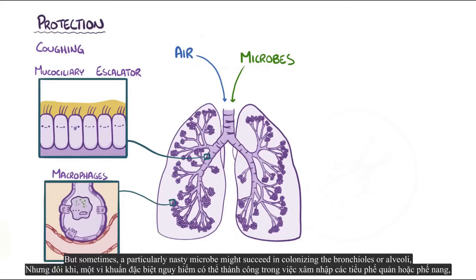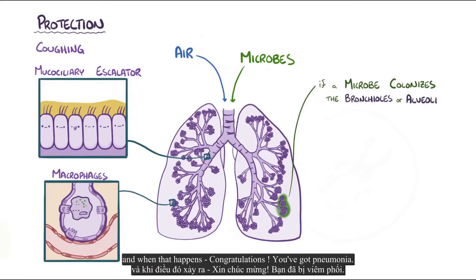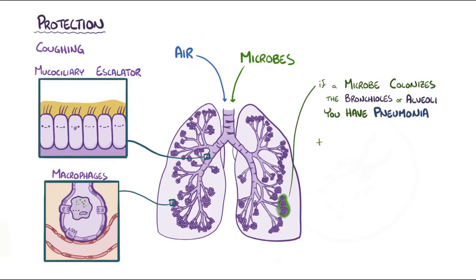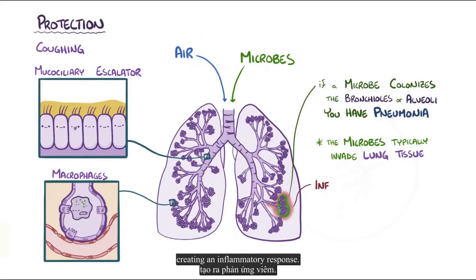But sometimes a particularly nasty microbe might succeed in colonizing the bronchioles or alveoli. And when that happens — congratulations, you've got pneumonia. Those microbes typically multiply and cross over from the airways into the lung tissue, creating an inflammatory response.